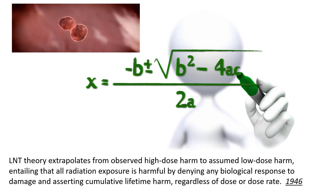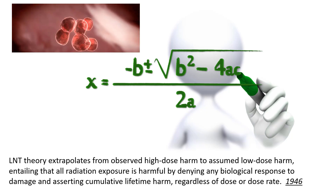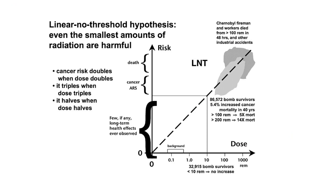The linear no-threshold dose has been taught for many years and is still taught. The linear no-threshold hypothesis is that even the smallest amounts of radiation are harmful. It extrapolates the information from the lifespan study of the survivors of the atomic bomb tests. According to this theory, cancer risk doubles when dose doubles, triples when dose triples, and conversely halves when the dose halves. Notice there is no evidence of any damage to tissue for a dose of 100 rem, which is 1 sievert. Only doses above 1 sievert have documented biological effect.